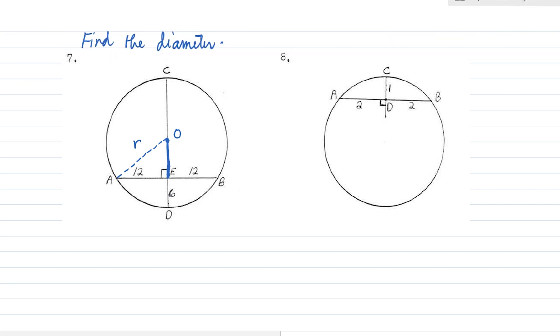Again, the whole thing is R, so therefore this part over here is R minus 6. Now, since we have a right triangle again, we can apply the Pythagorean theorem. And for this one, we have AO squared equals AE squared plus OE squared.